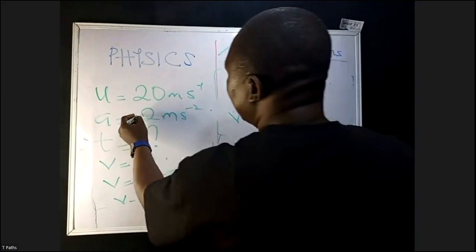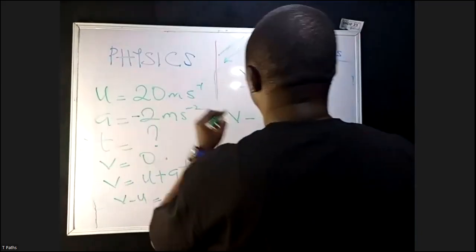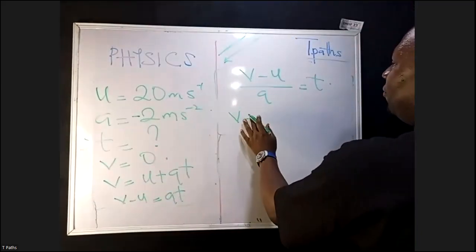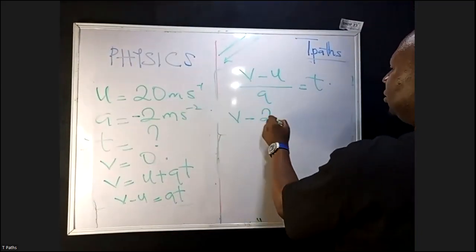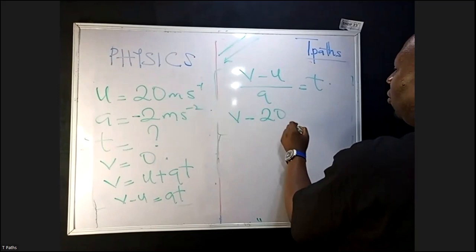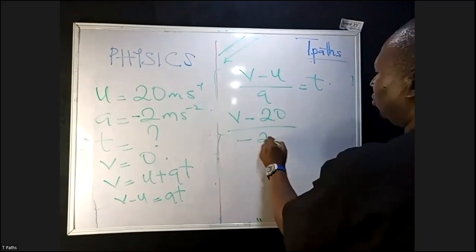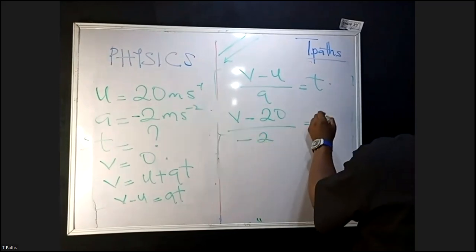Our A is minus 2. So we have T = (V − 20) / (−2). Since V is zero, that's (0 − 20) / (−2).